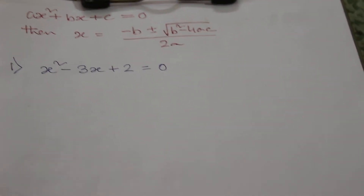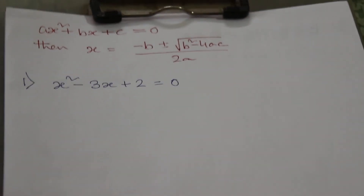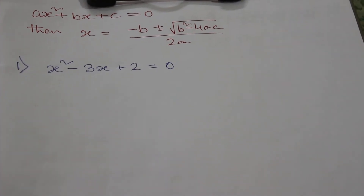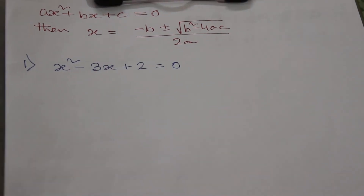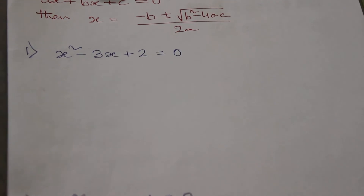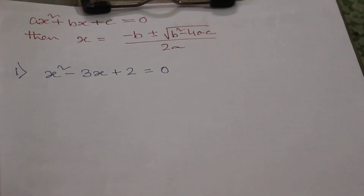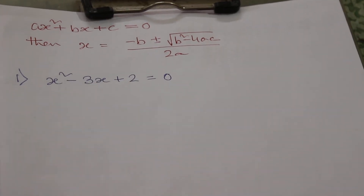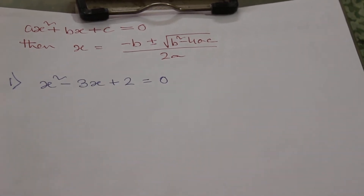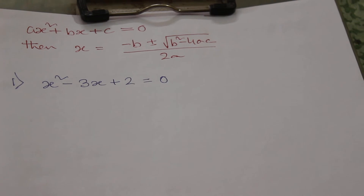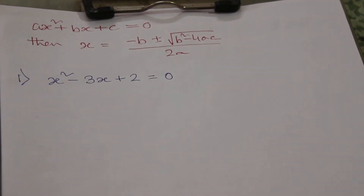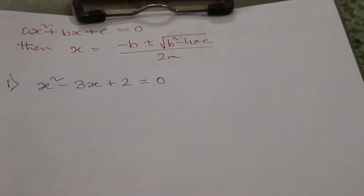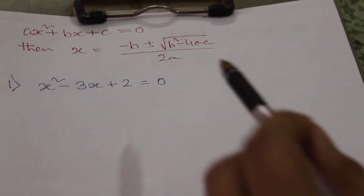Hey guys, welcome to our channel Learn to Win. Today our topic is Sridharacharya's formula for solving quadratic equations. Let this be a quadratic equation: ax² + bx + c = 0. Then according to this formula, the roots of x will be: x = (−b ± √(b²−4ac)) / 2a.